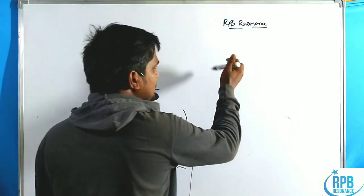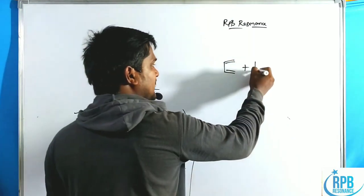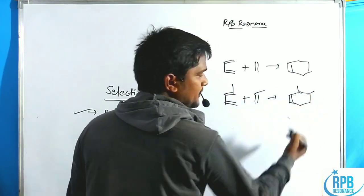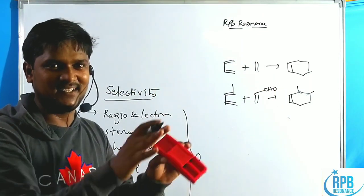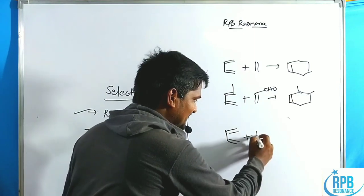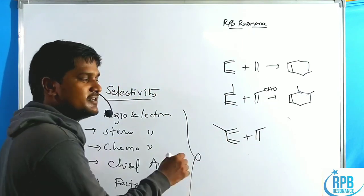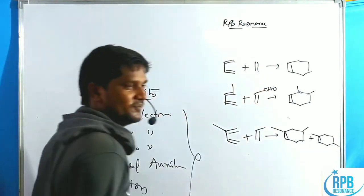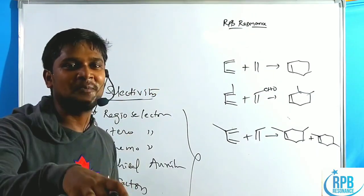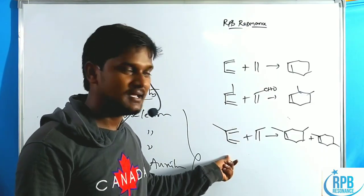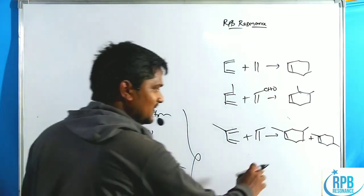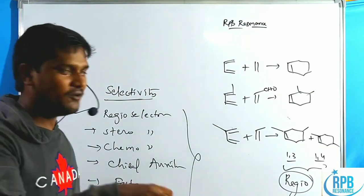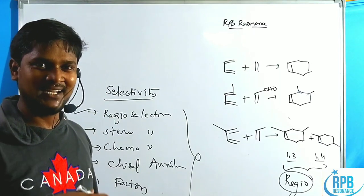For example, in the Diels-Alder reaction, we generally get a cyclic product. Whenever it has substituents, it will give a specific type of compound due to orbital interaction. In the Diels-Alder reaction, the position of the substituent is important — there are two types of possibilities: a 1,3-isomer or a 1,4-isomer. Among these two, both may be given as options, and we need to find the correct one. The 1,3 versus 1,4 position indicates regio-selectivity.